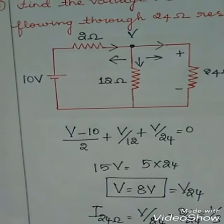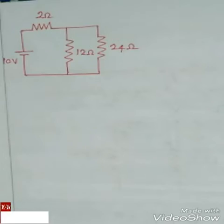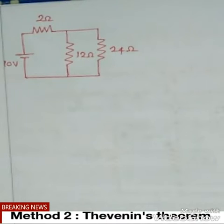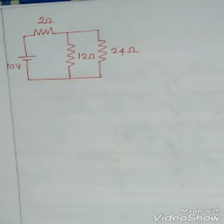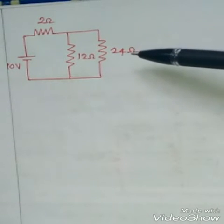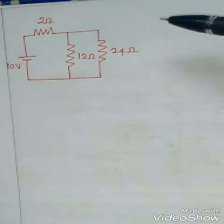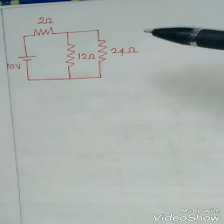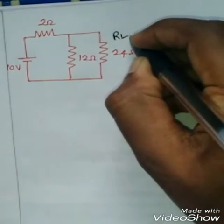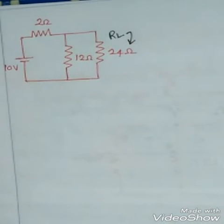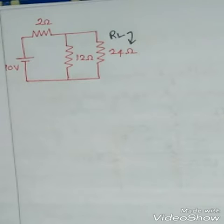Now we can solve using Thevenin's theorem to verify both solutions are the same. The first step in Thevenin's theorem is to identify the load resistance. Here, the 24 ohm resistor is the load resistor. The first step is to remove the load resistance — terminal A and B are across the 24 ohm resistor. While calculating VTH and RTH, we remove the load resistor.